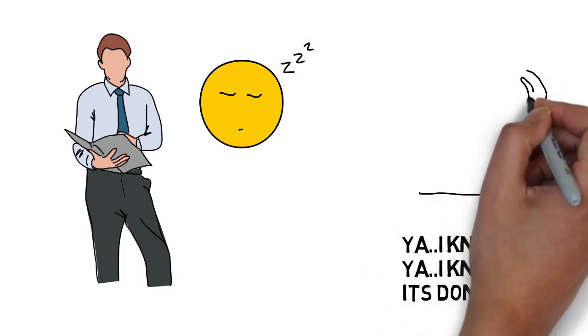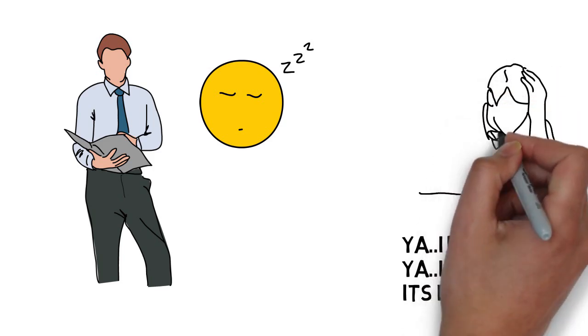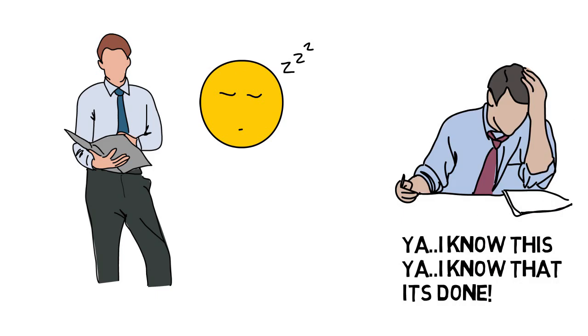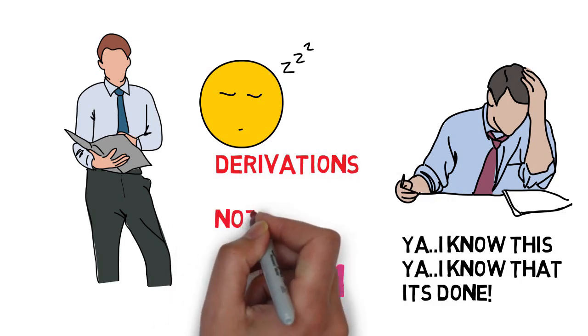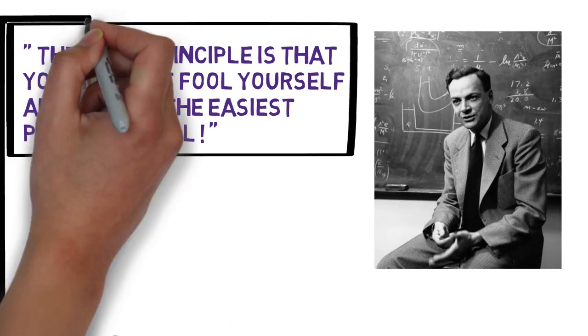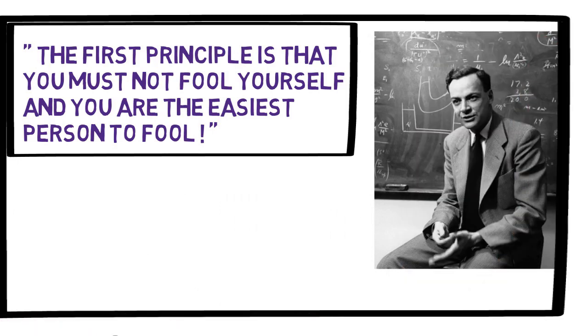But deep down, deep within, we know that we do not understand that. I do not know from where this step came. I do not understand this theorem completely. And this is where we start fooling ourselves. And unknowingly, we start to cram the things. But remember, these are derivations, not essays. You will forget them in minutes. And that's why Richard Feynman said, you are the easiest person to fool.